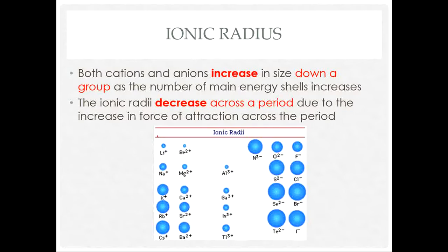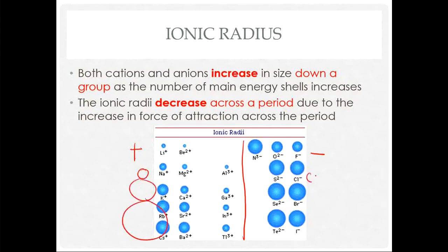In general, ionic radii decrease as you go across a period because of the increase in force of attraction on the electrons. Looking at this separately for cations and anions: as you go down, size increases; as you go across, size generally decreases.